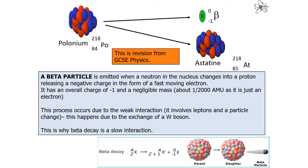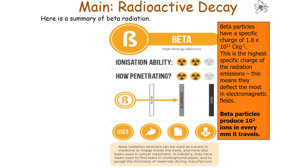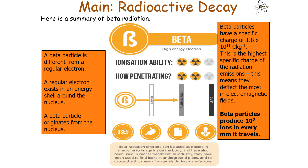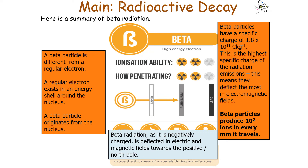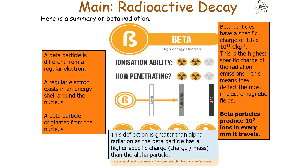A beta particle is emitted when a neutron in the nucleus changes into a proton, releasing a negative charge in the form of a fast-moving electron. This occurs via the weak interaction — involving leptons and a quark change — through the exchange of a W boson. Beta particles have the highest specific charge of any radioactive emission and produce 10² ions per millimetre. A beta particle is different from a regular electron in that it originates from the nucleus. As beta radiation is negatively charged, it is deflected towards the positive plate or north pole, and is deflected more than alpha due to its higher specific charge (charge divided by mass).